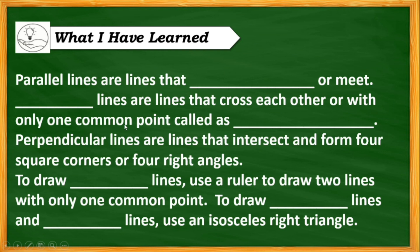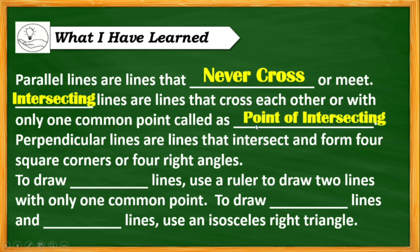Parallel lines are lines that never cross each other. Intersecting lines are lines that cross each other with only one common point called the point of intersection. To draw intersecting lines, use a ruler to draw lines with common point. To draw parallel lines and perpendicular lines, use the isosceles right triangle.